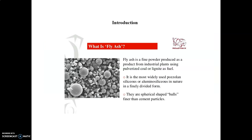What is fly ash? Fly ash is a fine powder produced as a byproduct from industrial plants using pulverized coal or lignite as fuel. It is the most widely used pozzolanic or aluminosiliceous material. In finely divided form, the particles are spherical in shape, resembling cement particles. This image shows fly ash under a scanning electron microscope — the spherical beads indicate the fine particles of fly ash.